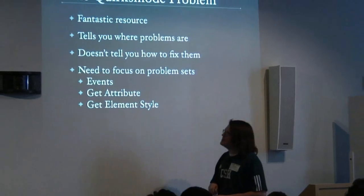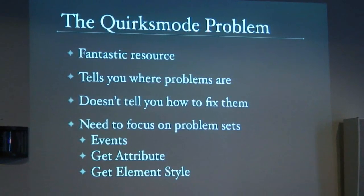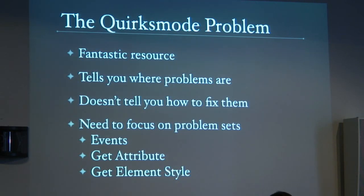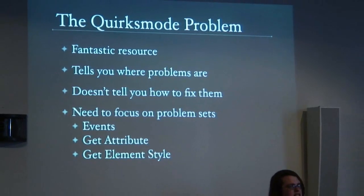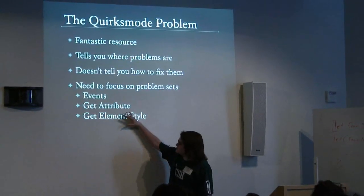Dealing with browser bugs. The Quirks Mode website written by PPK is a fantastic resource — it helped me so much when I was first learning JavaScript. But the fundamental problem with it is that it explains where a specific browser bug exists. It'll say the offsetTop method doesn't work quite properly in this browser. That's good to know, but it doesn't tell you how to solve a general-purpose problem — for example, how do you get the computed style of an element in a cross-browser manner? I think what's much more interesting and harder is understanding these meta-problems: things that encompass multiple APIs.